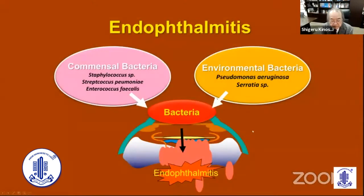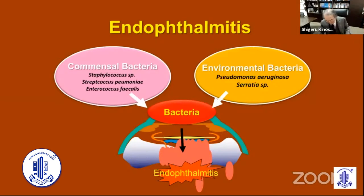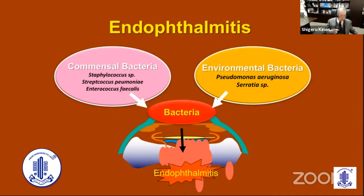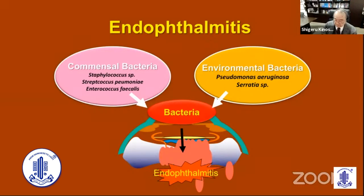Regarding endophthalmitis: there are two types based on causative organisms. Commensal bacteria including Staphylococcus, Streptococcus pneumoniae, and Enterococcus faecalis are major categories. Environmental bacteria like Pseudomonas aeruginosa are particularly dangerous — if endophthalmitis is caused by Pseudomonas, the eye may already be lost. Therefore, for surgical prophylaxis, we use levofloxacin 1.5 percent as the standard in Japan. Thank you very much for your kind attention.